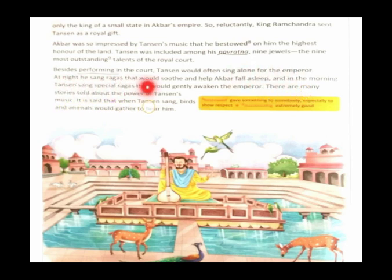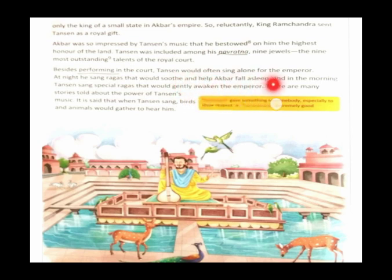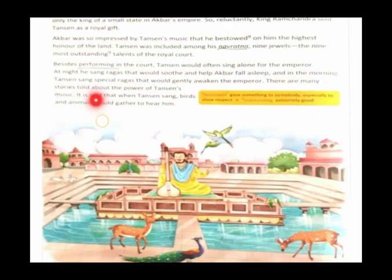At night, he sang ragas that would soothe and help Akbar fall asleep, and in the morning Tansen sang special ragas that would gently awaken the Emperor. There are many stories told about the power of Tansen's music. It is said that when Tansen sang, birds and animals would gather to hear him.